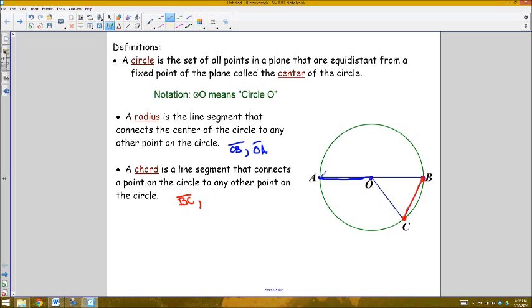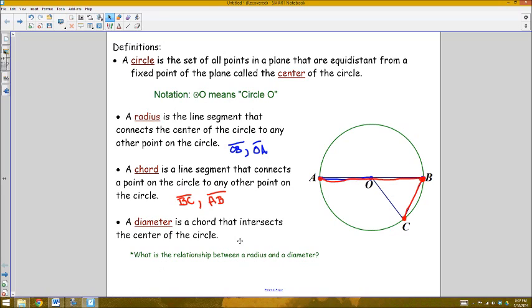Another chord would be the segment connecting A to B. Now that chord, AB, is actually a special kind. It's called the diameter. And the diameter is a chord that intersects the center of the circle. So it's a chord because it connects two points on the circle, but it's also a diameter because it passes through the center.